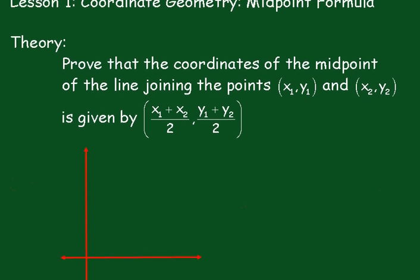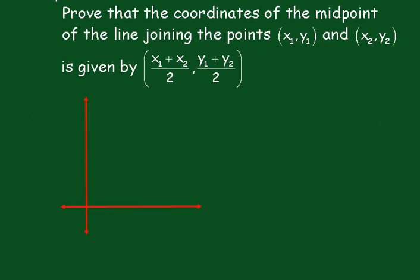First of all we'll start off and plot two points. We'll call these points A at (x₁, y₁) and over here B at (x₂, y₂), and just join those points up. And M, the midpoint, we'll call that (x, y).